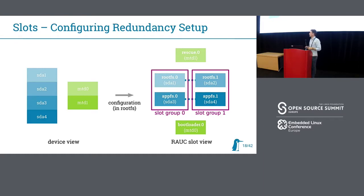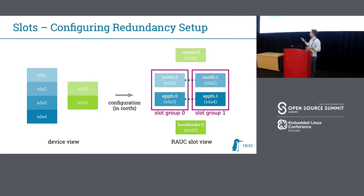One of the key tasks of RAUC is to have an understanding of what the system looks like — how the redundant layout is. For this, we have a configuration in the root file system that translates the device view, where we have devices and partitions, to a setup that describes slots. In RAUC, everything that is updatable is a slot. We transition this to a description of a redundant update scenario — for example, here we have two root file systems and two application file systems. A so-called slot class describes slots of the same purpose, and we have instances of this class. This description allows us to set up very flexible scenarios.